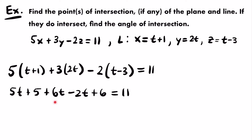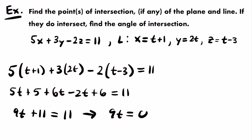Subtracting 11 from both sides gives 9t equals 0, so dividing by 9 gives t equals 0. This means the line and plane do intersect at the point where t equals 0. Plugging t equals 0 into each parametric equation: x equals 0 plus 1 equals 1, y equals 2 times 0 equals 0, and z equals 0 minus 3 equals negative 3. The point of intersection is (1, 0, negative 3).